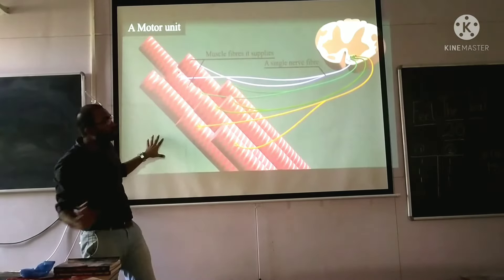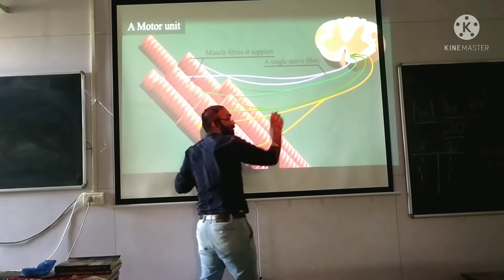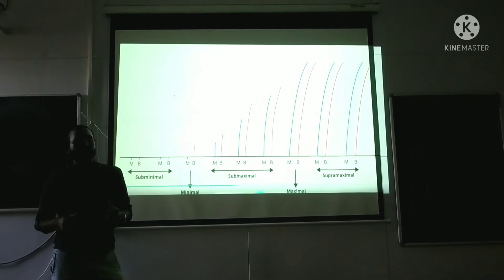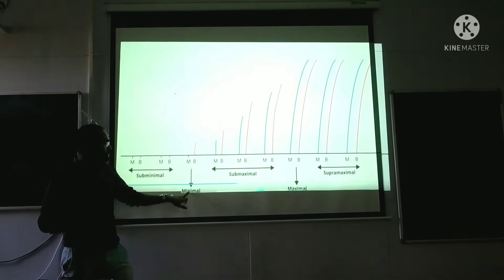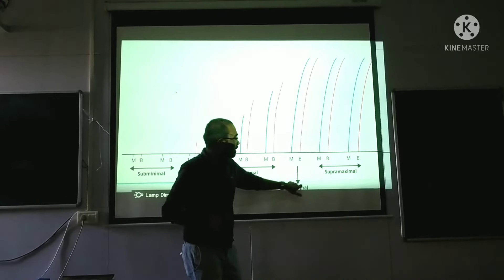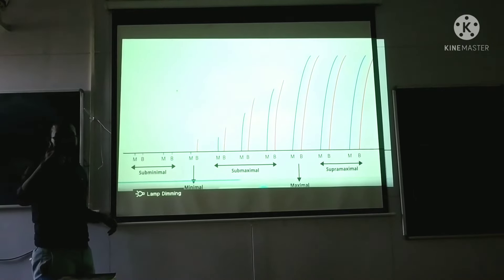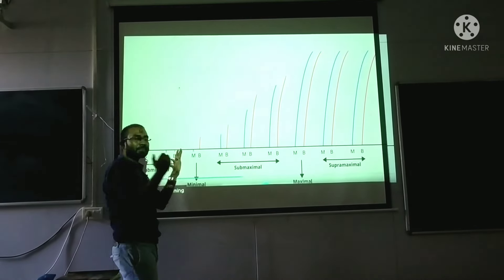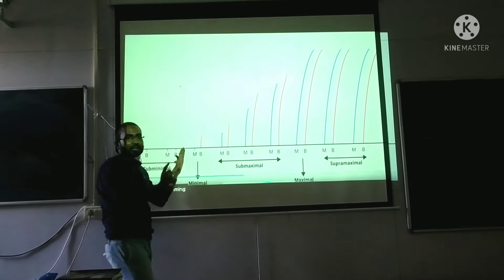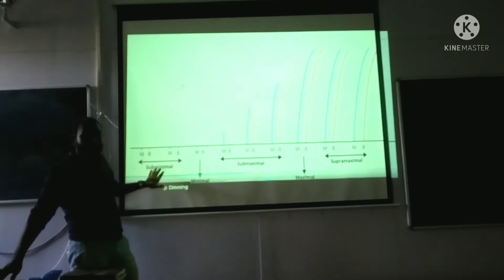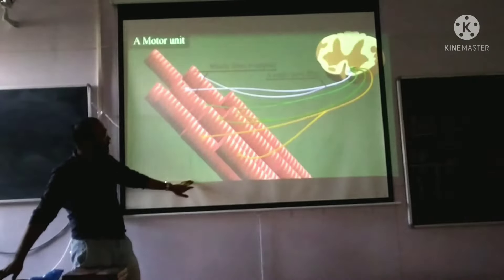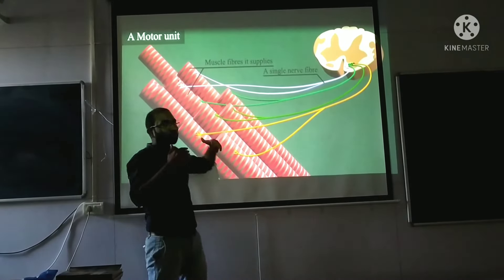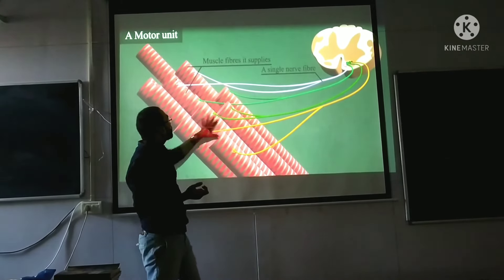At subminimal stimulus, the strength of stimulus was below threshold, so no motor units are recruited. Here we have given different strengths of stimulus: subminimal, minimal, submaximal, maximal, and supramaximal. At subminimal and minimal, make and break give no response or minimal response. The reason is that subminimal stimuli were not strong enough to cause contraction — the recruitment of motor units did not take place.